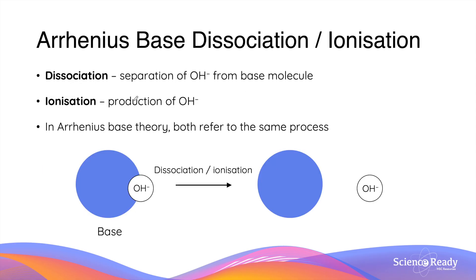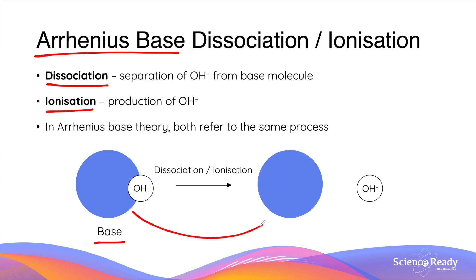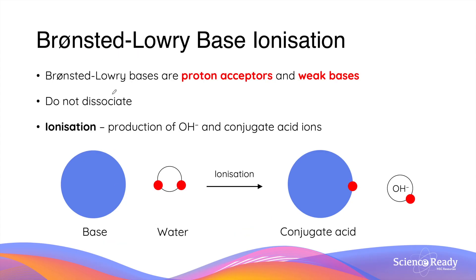Unlike acids, dissociation or ionization of bases is not as straightforward. Dissociation — that is, when a molecule separates into smaller components — only occurs in Arrhenius bases. Since Arrhenius bases dissociate to produce hydroxide ions, dissociation and ionization refer to the same process. As you can see in the diagram, a molecule of hydroxide ion is produced when an Arrhenius base separates. Bronsted-Lowry bases are proton acceptors by definition, and they are all weak bases. In contrast to Arrhenius bases, Bronsted-Lowry bases do not dissociate, but only ionize by gaining a positively charged proton — that is, a hydrogen ion.